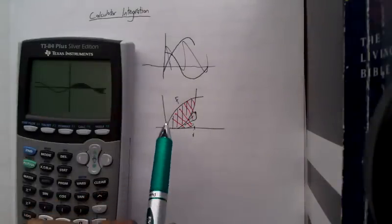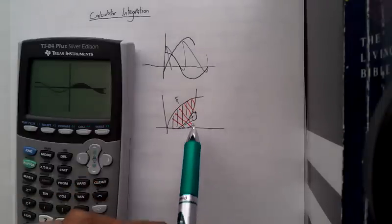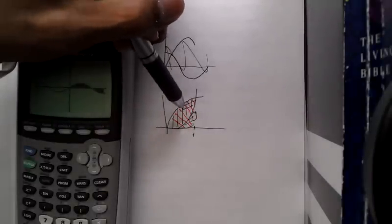So essentially, if you take the integral of F and then subtract the integral of G, then you'll get this area that's bounded between the two graphs.